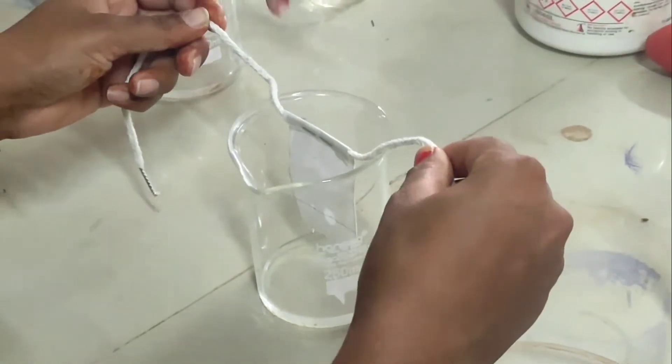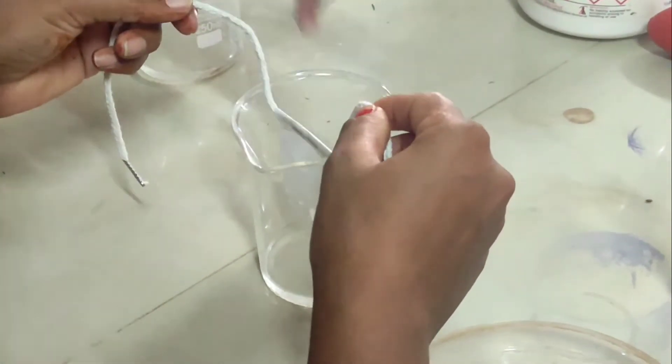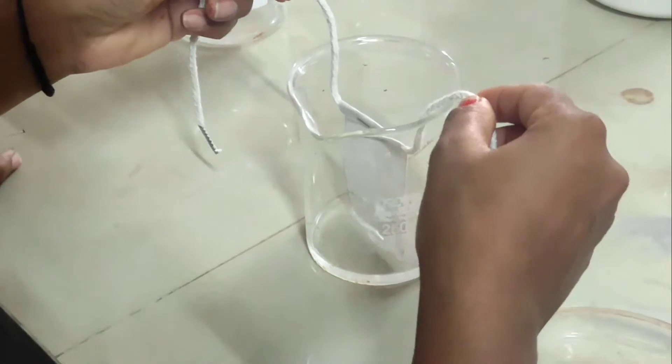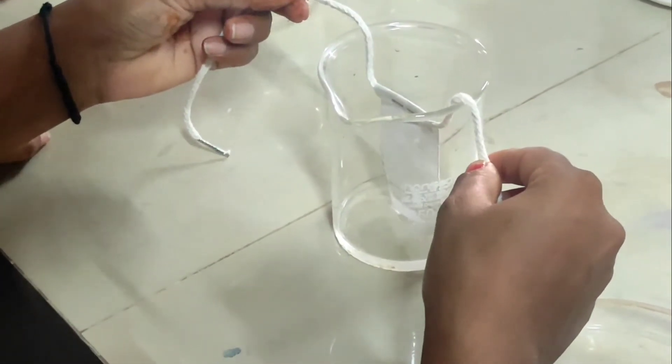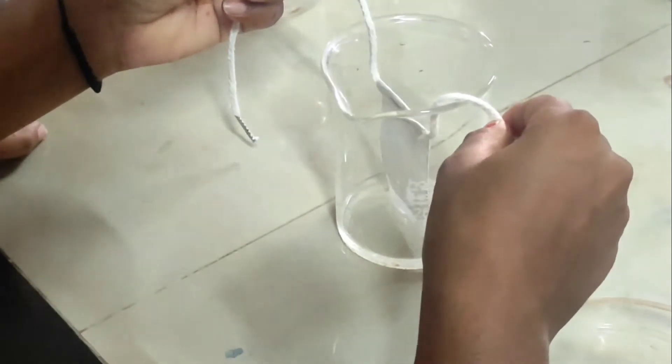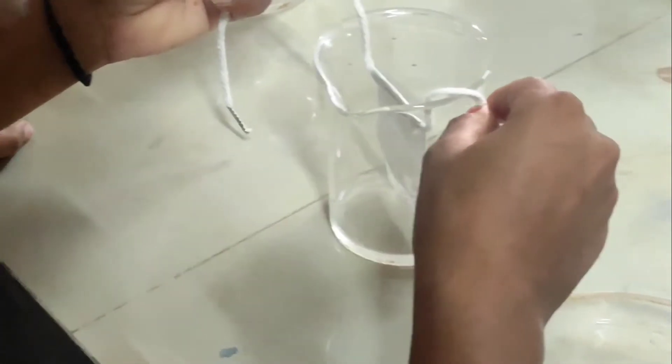Now the solvent is rising by capillary action against gravity, as you are seeing in this video. Meanwhile, we have prepared our spraying agent that contains potassium permanganate and sodium bicarbonate, which is sprayed over the paper after its complete running and drying. It will give a yellow colored spot where the sugars are identified. Since our paper has reached approximately 80% of its area, we have removed the paper and marked the solvent front with a pencil. Allow the paper to dry till it completely dries.